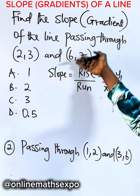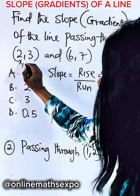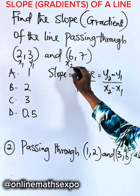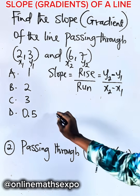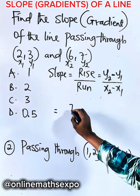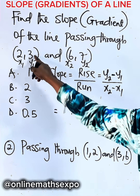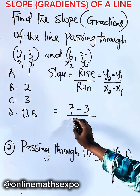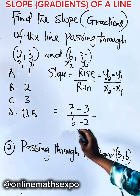So let's apply it here. This is your x1, this is your y1, here is x2, and here is y2. So applying it here, we are going to have y2 is 7 minus our y1 is 3, and our x2 is 6 and our x1 is 2.